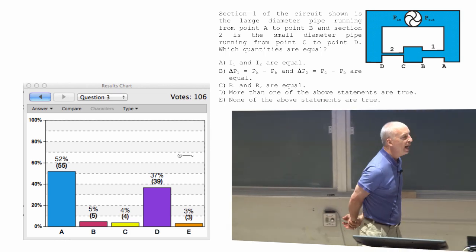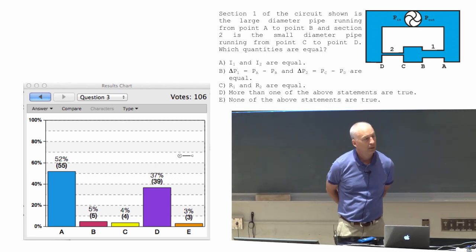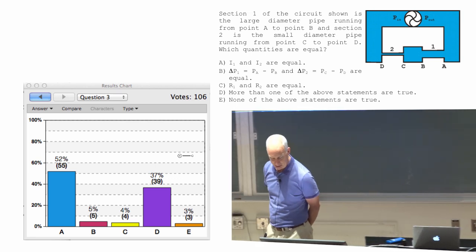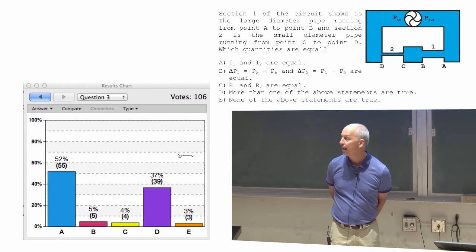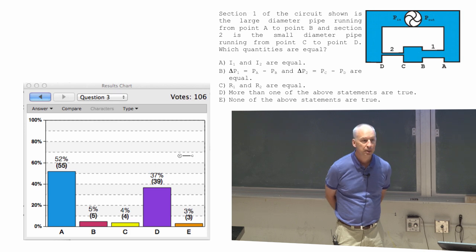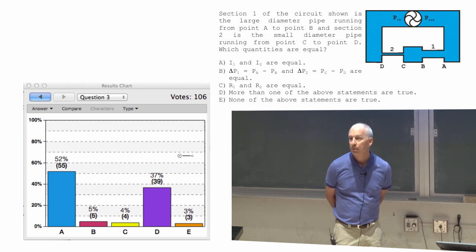The pressure drops between A and B if the flow is clockwise. So, the flow is from A to B and from C to D. The pressure drops from A to B. How about from C to D? Pressure drop? Same discussion, same answer. Pressure drop.